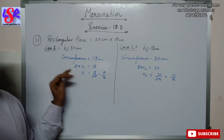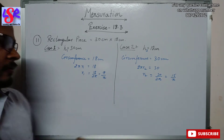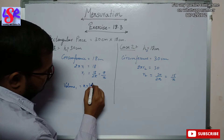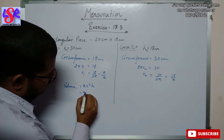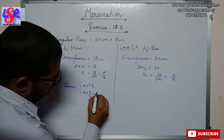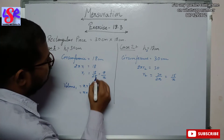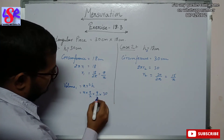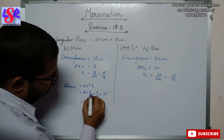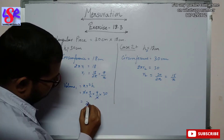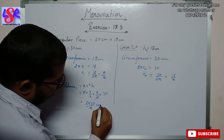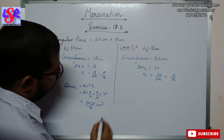Now we find the volume of both cylinders. Volume 1 = πr²h = π × (9/π) × (9/π) × 30. The π cancels out and multiplying all remaining terms we get 2430/π cm³.